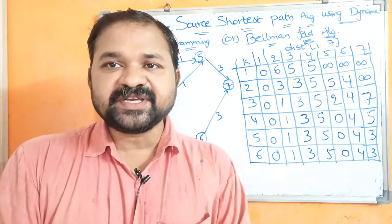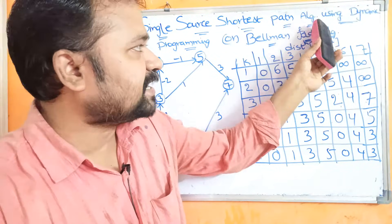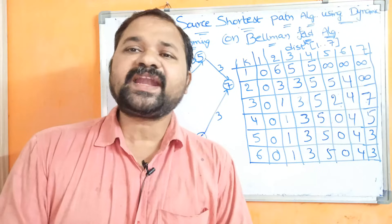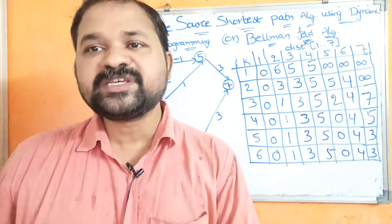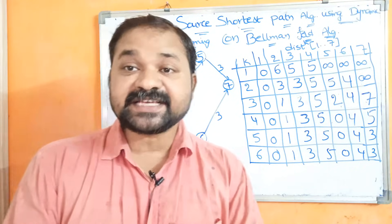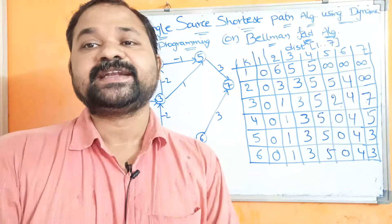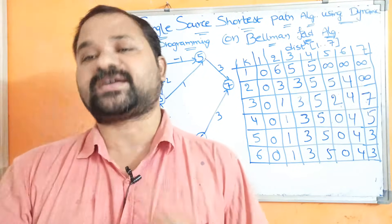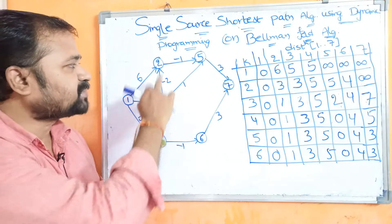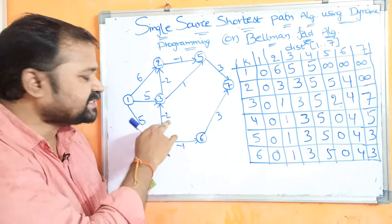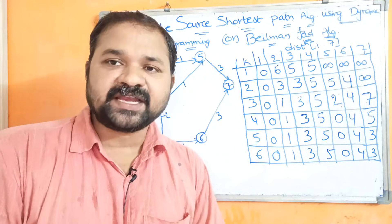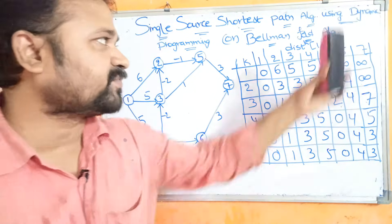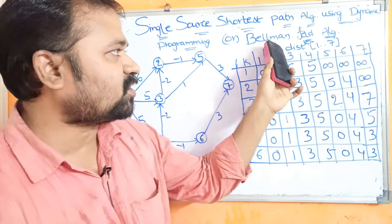In this video we are going to discuss the single source shortest path algorithm using dynamic programming. This algorithm is called the Bellman-Ford algorithm. We have already seen the single source shortest path algorithm using the greedy method — that algorithm is called Dijkstra's algorithm. The major problem with that approach is Dijkstra's algorithm doesn't allow negative edges, meaning it doesn't allow edges with negative cost.